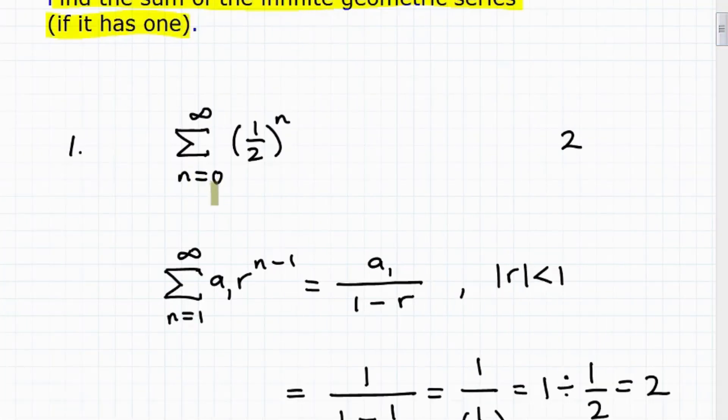Here's our first problem. We want to find the sum of n equals zero to infinity, right? So we're at an infinite amount of terms of one half to the n power. Okay, and the answer is two.